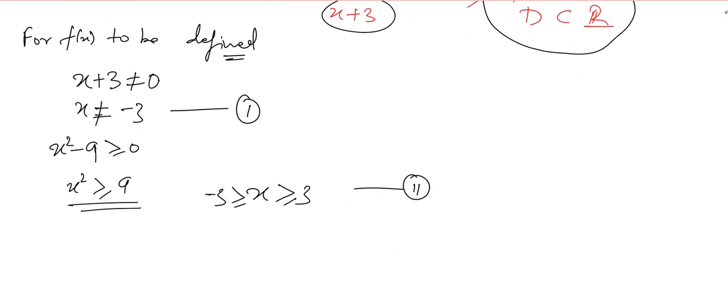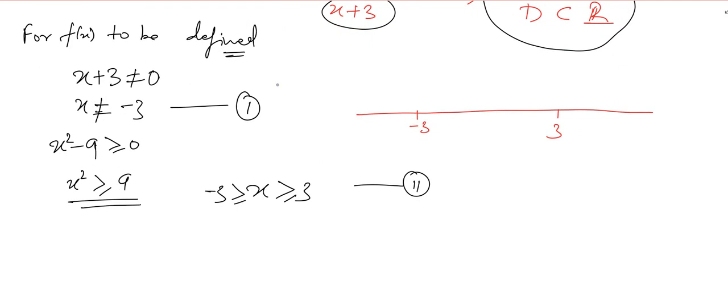Let us plot these two conditions on our number line. Let me make a number line like this, and let us take this as minus 3 and this is 3. The first condition says that x can be anything but not this minus 3.